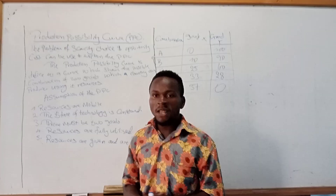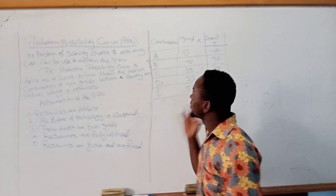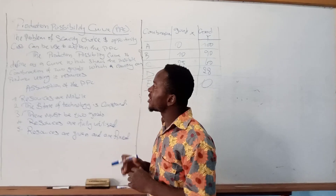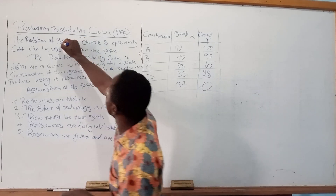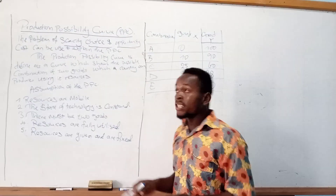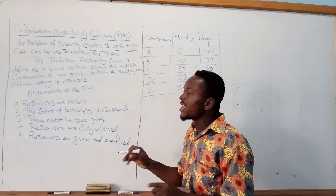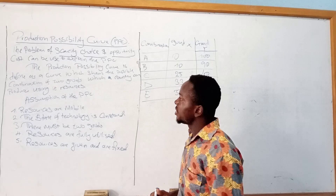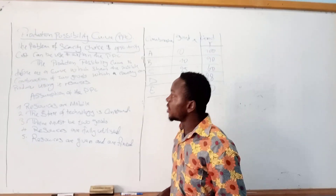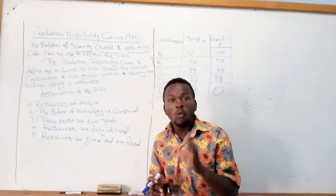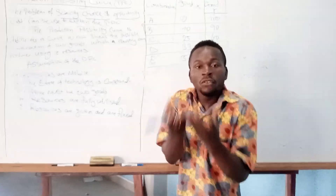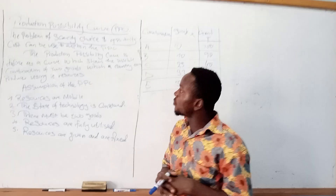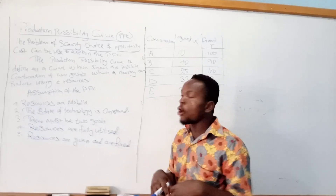The production possibility curve explains the problem of scarcity, choice, and opportunity cost. The production possibility curve can be used to explain all about this problem of scarcity, choice, and opportunity cost — how choice is made, how scarcity arises, and how opportunity cost is determined. The production possibility curve is defined as a curve which shows the possible combinations a nation or an individual can produce using its resources, whether it be good Y or good X, or capital goods or consumer goods.